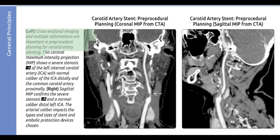Cross-sectional imaging and multiple reformations are important in pre-procedure planning for carotid artery stenting. This coronal maximum intensity projection shows a severe stenosis of the left internal carotid artery with normal caliber of the ICA distally and the common carotid artery proximally. Sagittal MIP confirms the severe stenosis and a normal caliber distal left ICA.